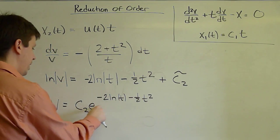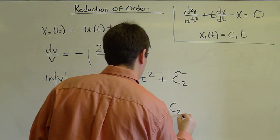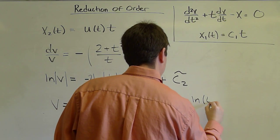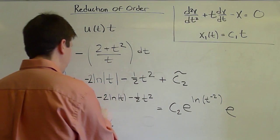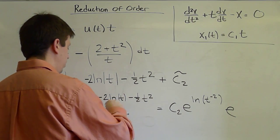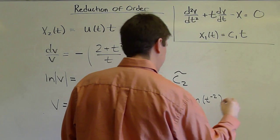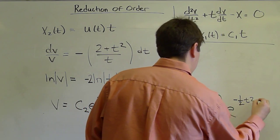And here, negative 2 ln(t) is ln(t^(-2)). And then e to a sum is the product of the two e's. So this becomes e^(ln(t^(-2))) times e^(-1/2 t²).